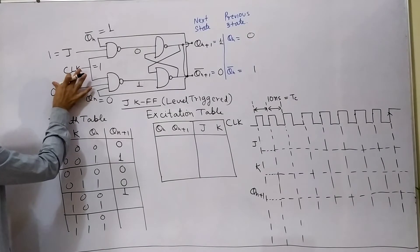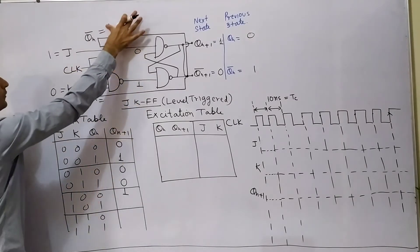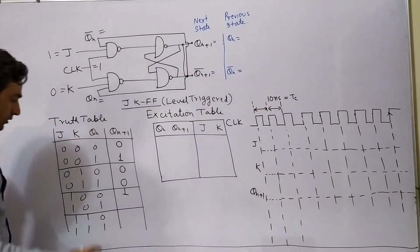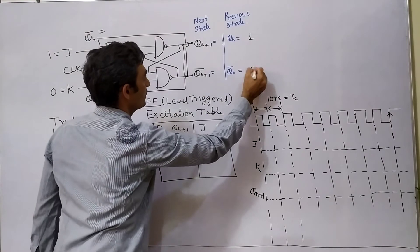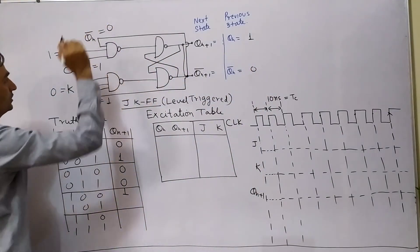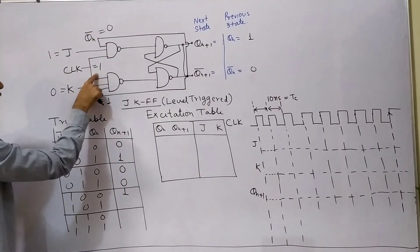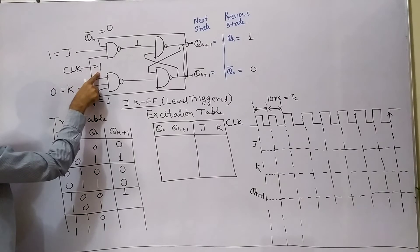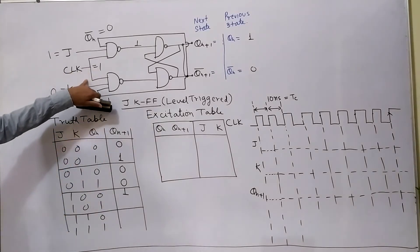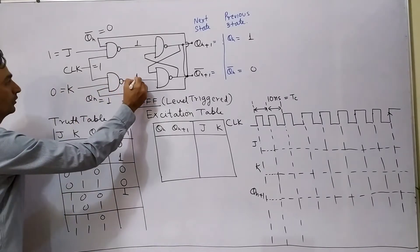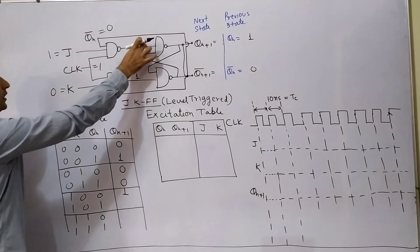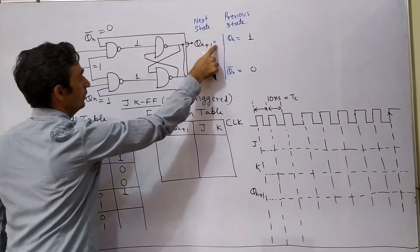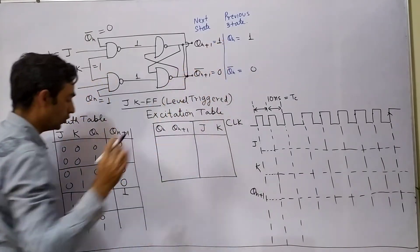Next case: J=1, K=0, QN=1. Present state value is 1, so QN equals 1, QN bar equals 0. With 0, 1, 1 — any input going to 0 means output is 1. With 1, 0, 1 and 1, 0, 1 — any input going to 0 means output is 1, so output will not change. As and when there is binary 1, output never changes. So for J=1, K=0, QN=1, next state is binary 1.